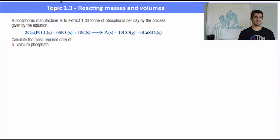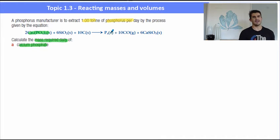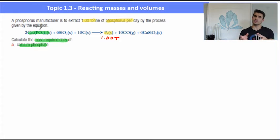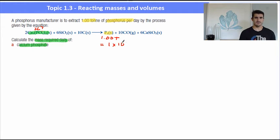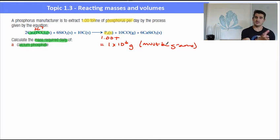Second example: a phosphorus manufacturer is to extract 1 tonne of phosphorus per day by the process given below. Calculate the mass required of calcium phosphate, Ca3(PO4)2, which is the thing we need to find. We've been told we have 1 tonne of phosphorus, and x is our calcium phosphate. We need to convert 1 tonne into grams — that means 1 times 10 to the 6 grams. 1 tonne is a million grams, so you must do the conversion, whether it be tonnes or kilograms. Then the process is the same.